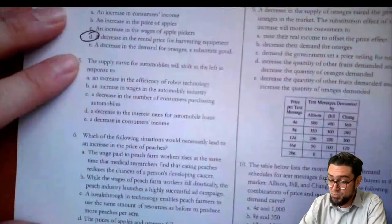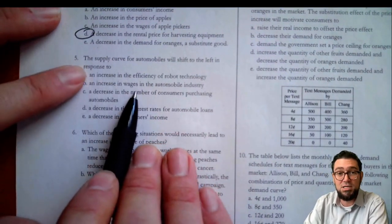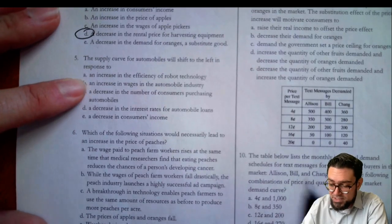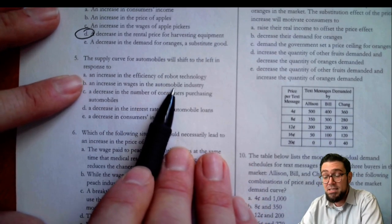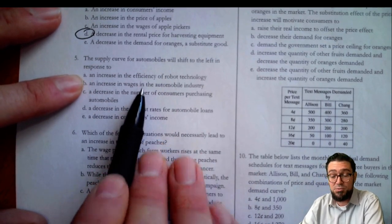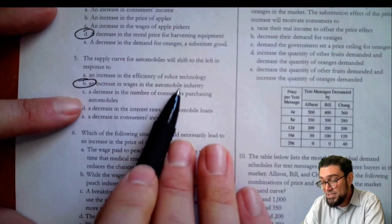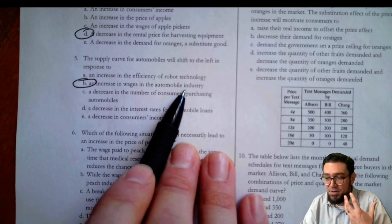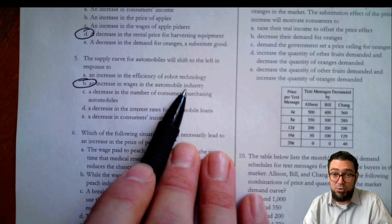Number five: the supply curve for automobiles shifts to the left — a decrease in supply. What could cause this? More efficient robots? No, that would increase supply. An increase in wages in the industry? Yes — that makes production more expensive. So the answer is B. Higher wages in the industry decrease the supply because they increase the cost of production.